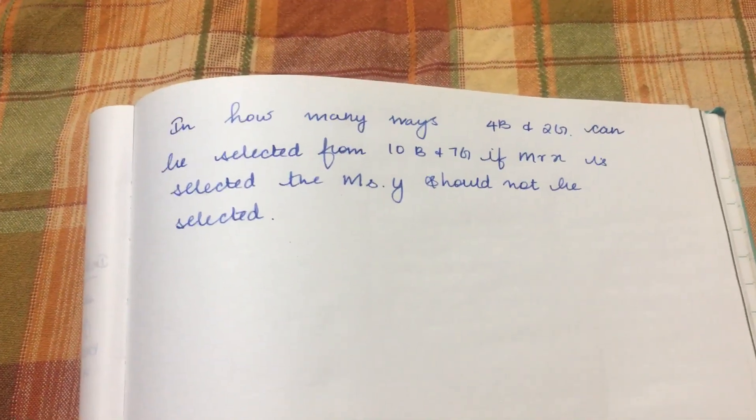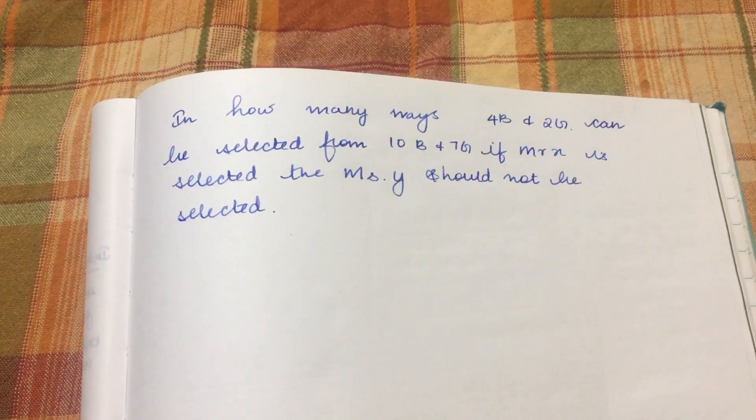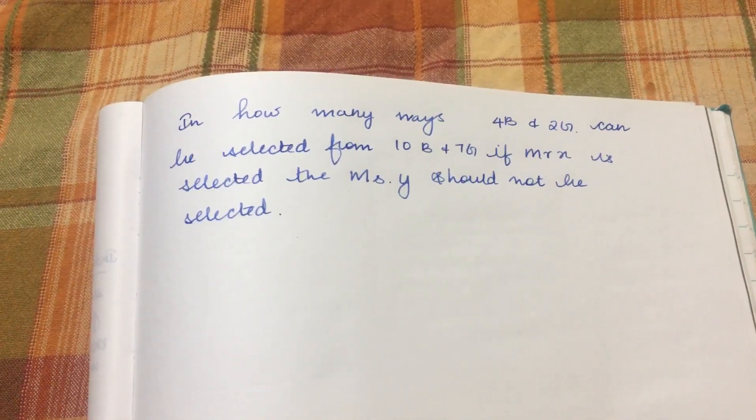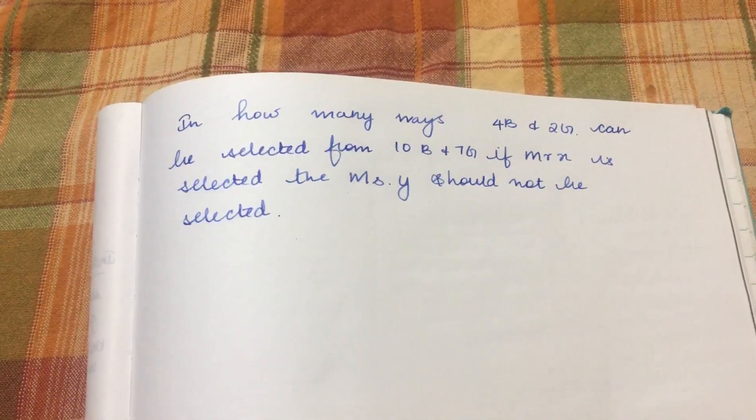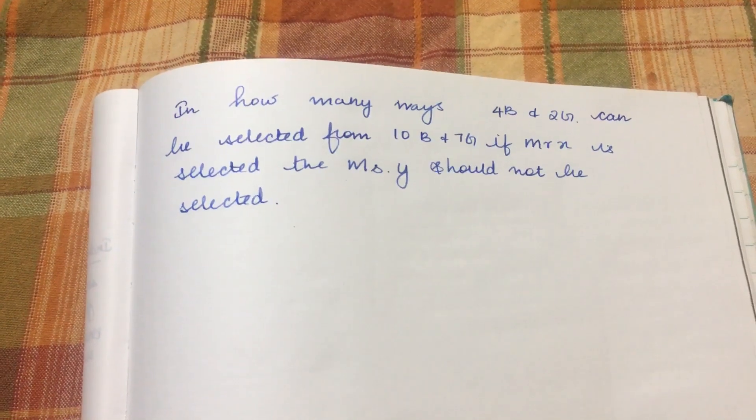Hey all, in this problem: In how many ways can 4 boys and 2 girls be selected from 10 boys and 7 girls if Mr.